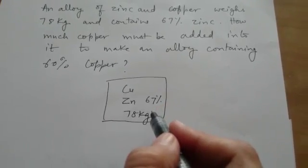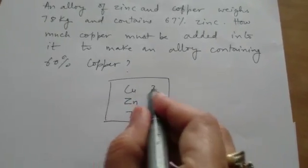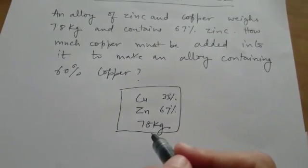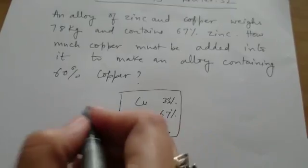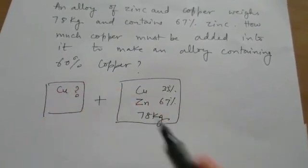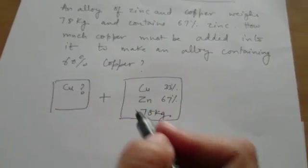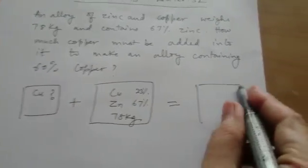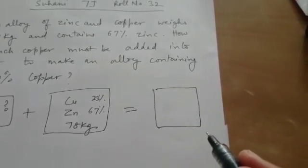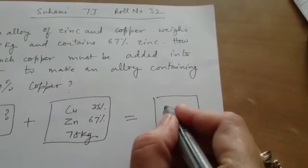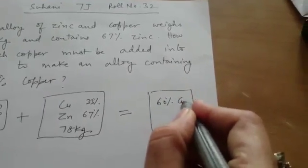Can you tell me how much copper will be there? 33%. Now, the question is how much copper must be added to this? We have to find copper. How much copper must be added so that the new alloy will be 60% copper?